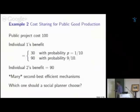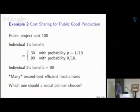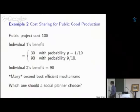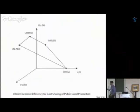I have another example with public good production. There's a public project with some cost; it will have a benefit of 90 for the second individual, but for the first one the benefit is unknown. Again, you can look at the interim incentive efficient mechanisms and plot them in the space of utilities — and you're left wondering which contract to pick.